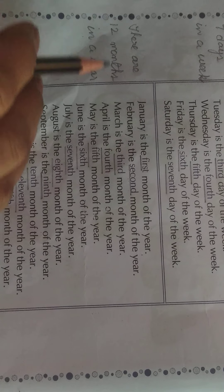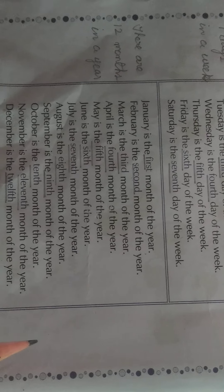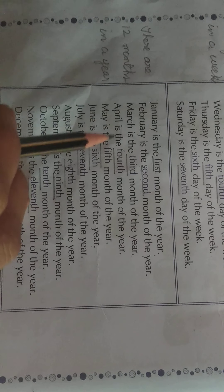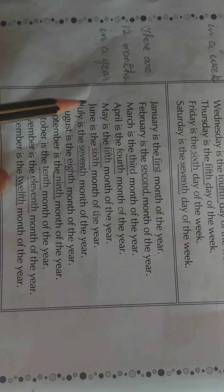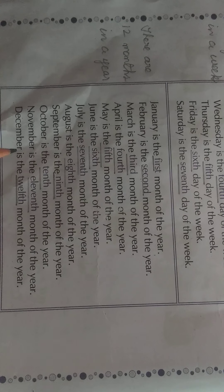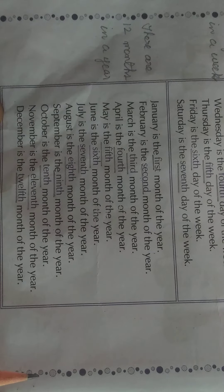There are 12 months in a year. One year mein 12 months hote hai. What are they? January, February, March, April, May, June, July, August, September, October, November, and December. All these are months of the year.